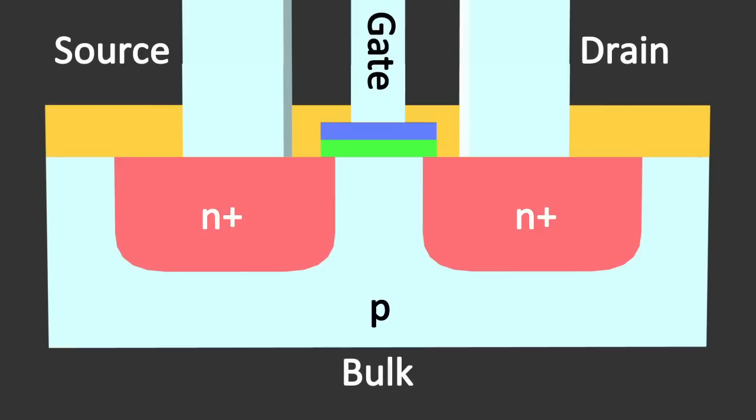Source and bulk are often connected to each other, so they share the same source of current. The objective is to control the flow of current between source and drain. This is accomplished with the gate.